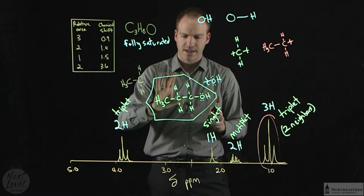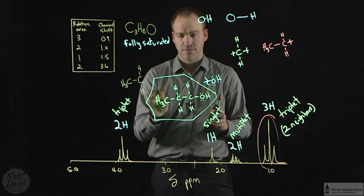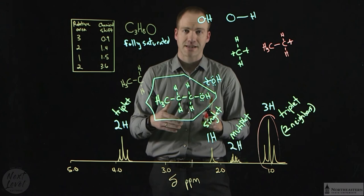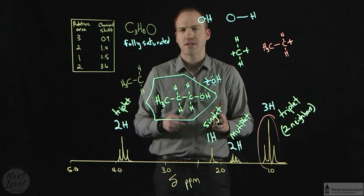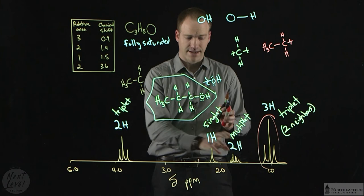I would expect to see a signal that integrates to two and is a multiplet. The reason is this CH2 has three neighbors over here and two neighbors over here, so that's a total of five neighbors. N plus one, we would expect six peaks. In a perfect world, you would see all six peaks down here, but most NMR instruments are not sensitive enough to give you that information. So we just call it a multiplet and say that CH2 has got a bunch of neighbors. And that's the signal we see here.